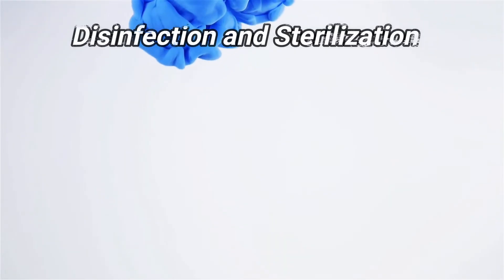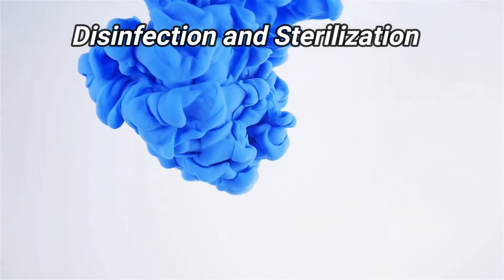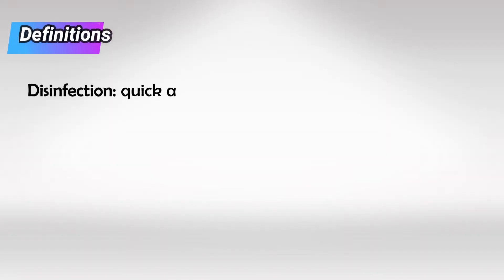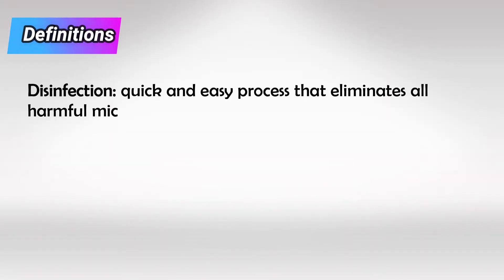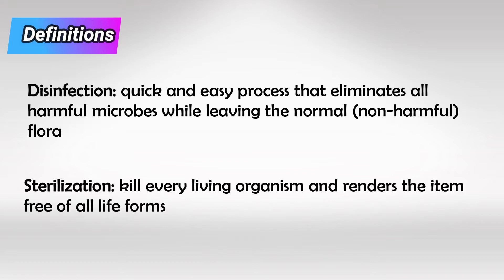Welcome back. In this video we'll talk about the different types of sterilization and disinfectants. To disinfect something is to decrease the number of pathogens and microbes to the point where it doesn't cause infections anymore. To sterilize something is to completely wipe out all life forms in the equipment, including bacteria, fungi, protozoa, spores — literally everything.